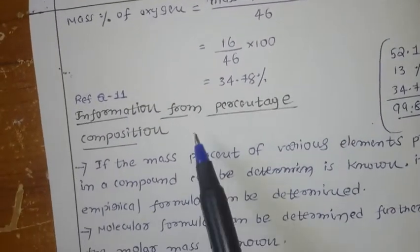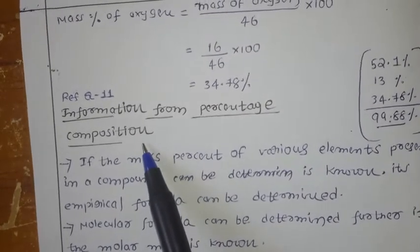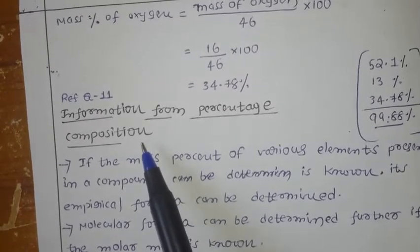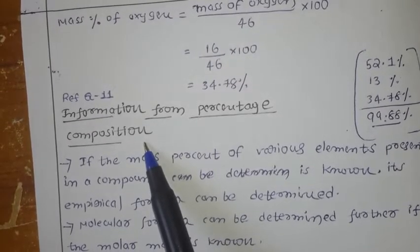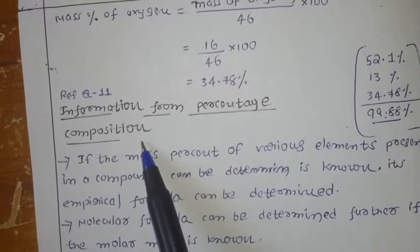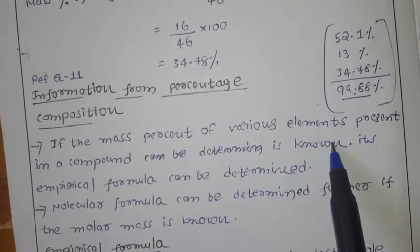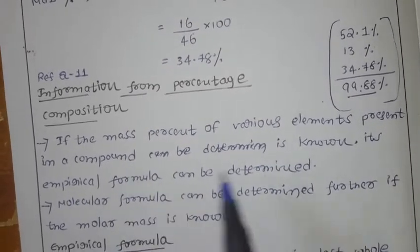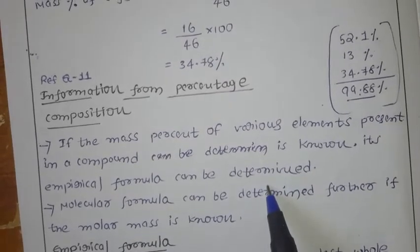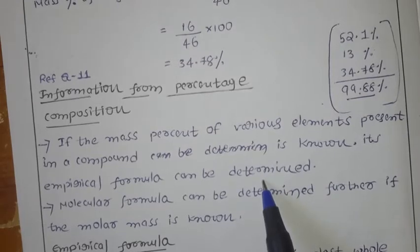Next, let us see the information we can get from percentage composition. Already we have learned how to calculate the percentage composition. Now, what is the use of it — what type of information can you get from percentage composition? If the mass percentage of various elements present in a compound is known, its empirical formula can be determined. So if you know the mass percentage, you can calculate the empirical formula.